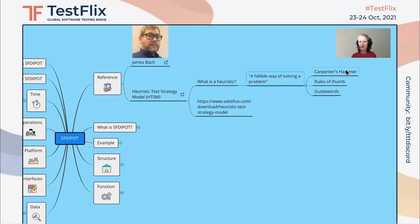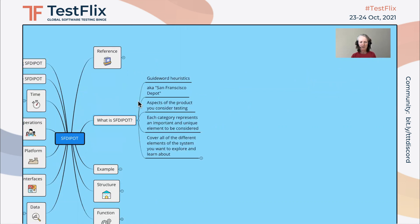James gives an example of a carpenter's hammer as a heuristic. A carpenter can use a hammer to solve some of their problems if it's used skillfully, but it won't solve all of their problems. They will need other tools. Other examples of heuristics are rules of thumb and guide words. San Francisco Depot are an example of guide word heuristics.